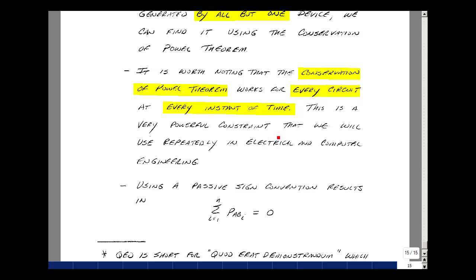It's worth noting that the conservation of power theorem works for every circuit at every instant in time. This is analog circuits, digital circuits, wireless circuits. It's a very powerful constraint that we can use in a variety of problem solving in electrical and computer engineering.